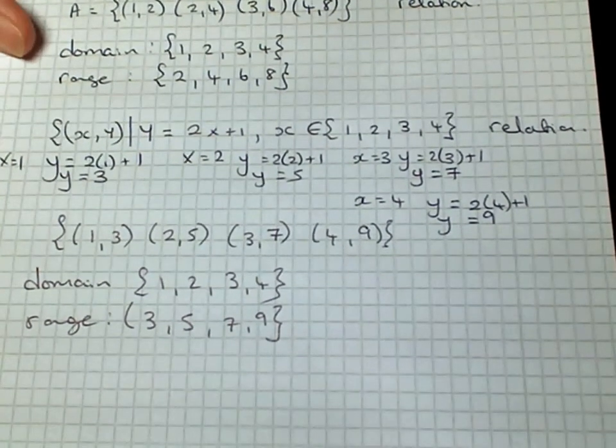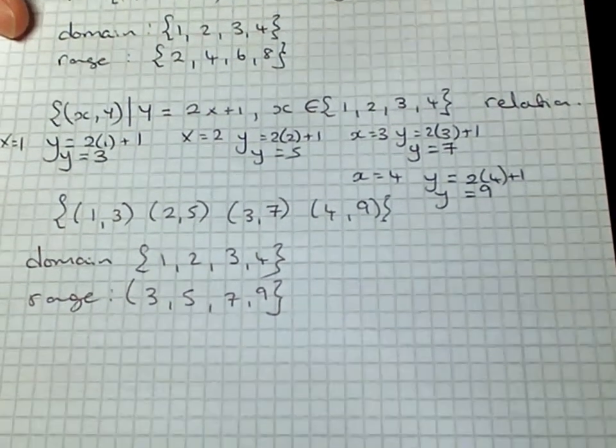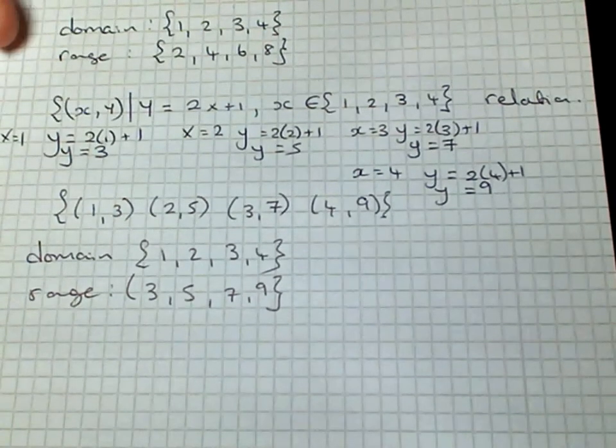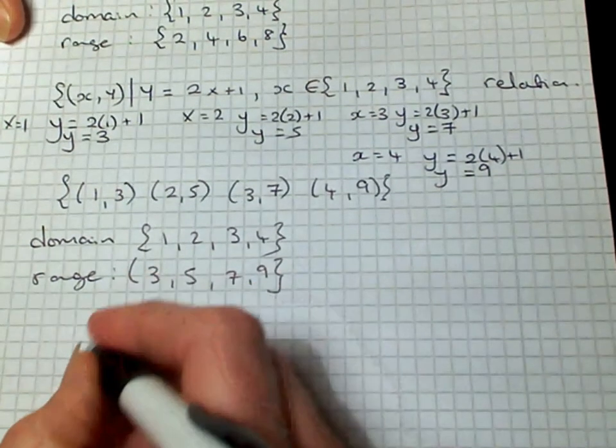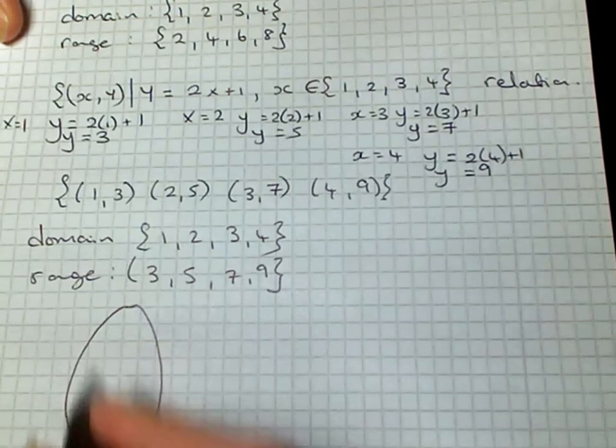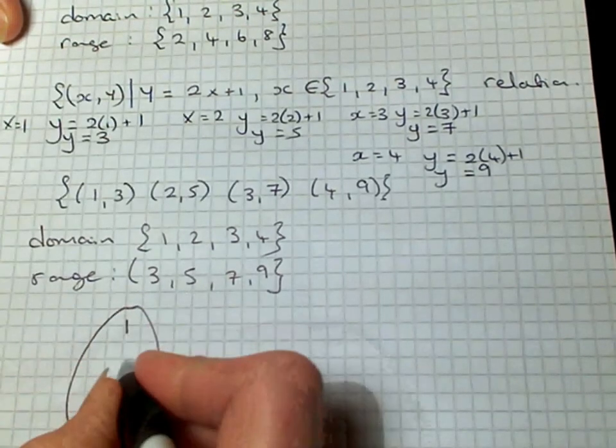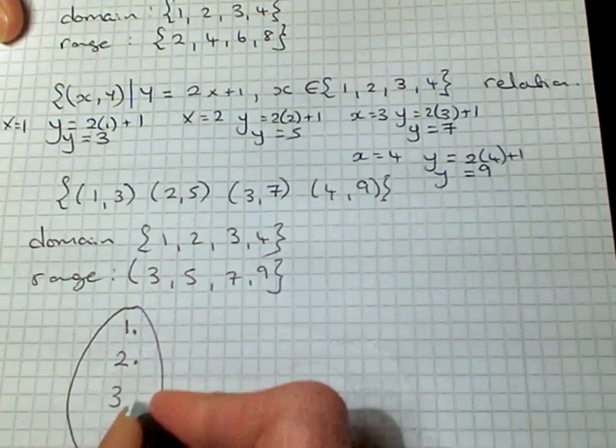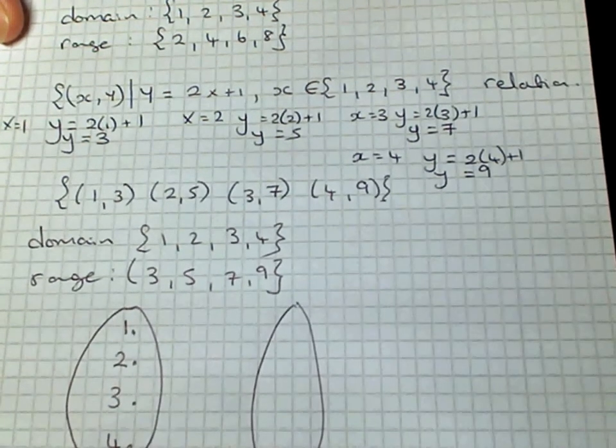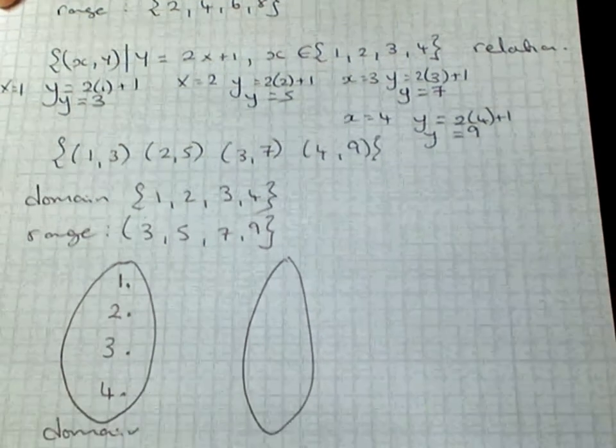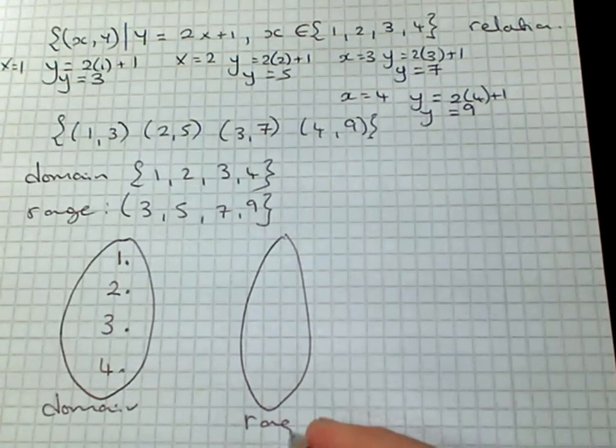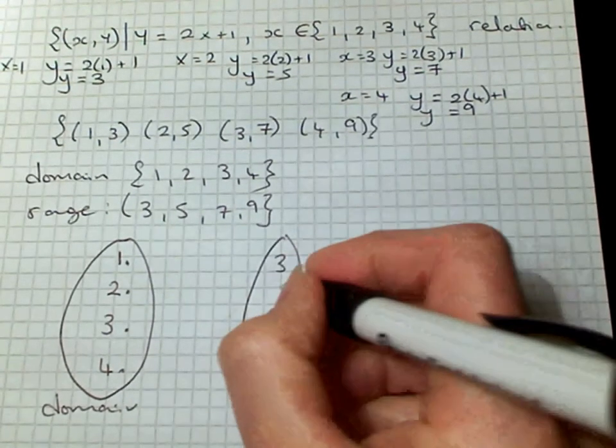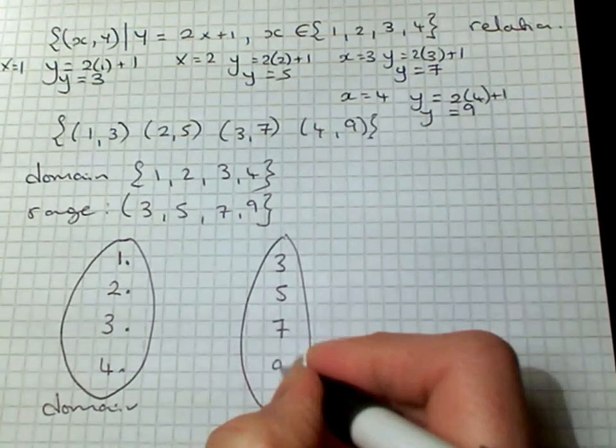You can plot that or you can show the relation on a mapping diagram, and you just show it like this. Your domain goes in here, so it's 1, 2, 3, and 4. So there are our domain values. And our range is 3, 5, 7, and 9.